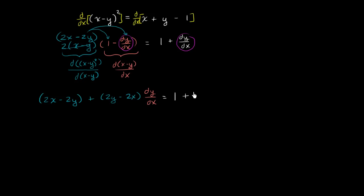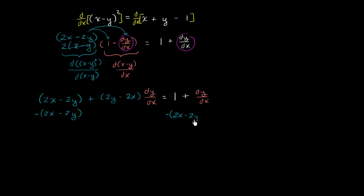Now there are a couple of things we can do. We can subtract (2x minus 2y) from both sides, and also subtract a dy/dx from both sides so that all dy/dx terms are on the left-hand side and all non-dy/dx terms are on the right-hand side.